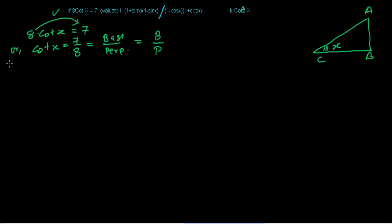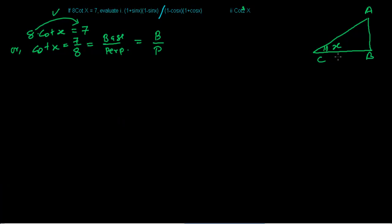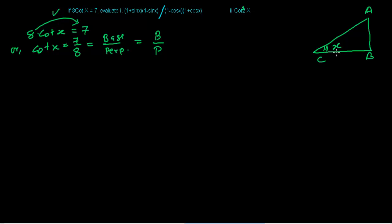Coming back to our triangle figure: the side on which the angle sits is the base. Since angle x sits on this side, the base equals 7. The side opposite to the angle is the perpendicular, so the perpendicular equals 8.